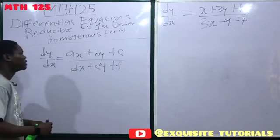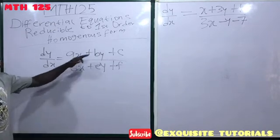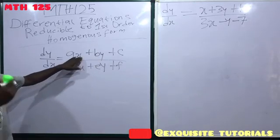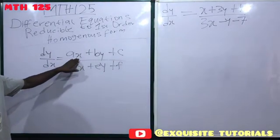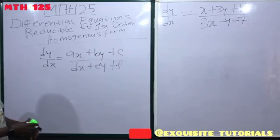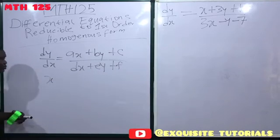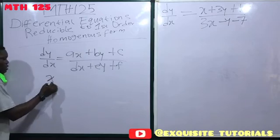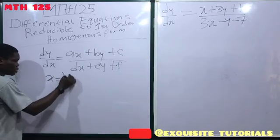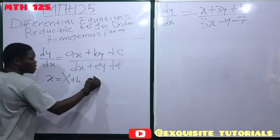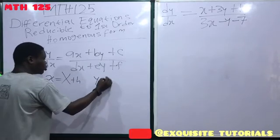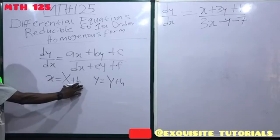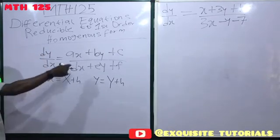Whenever you encounter equations like this, the best way to make it homogeneous is to see x as another variable plus a constant — you no longer see x as just x. So let's let x equal X plus h, and let y equal Y plus k.